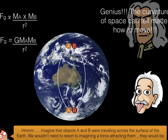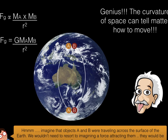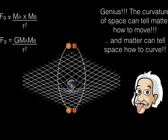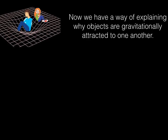Einstein loves that. He thinks that's a great idea. So what he came up with is that the curvature of space can tell matter how to move, and that matter can tell space how to curve. Now we've got a way of explaining why objects are gravitationally attracted to each other.